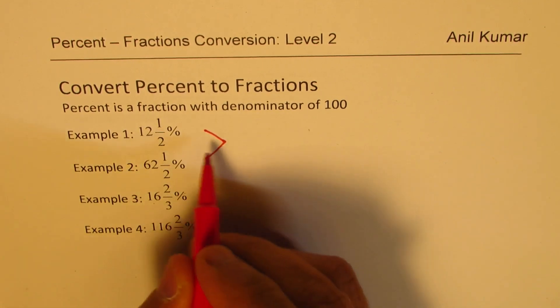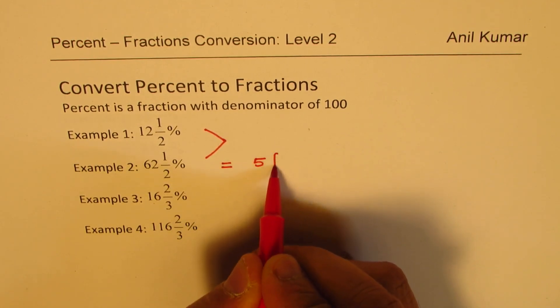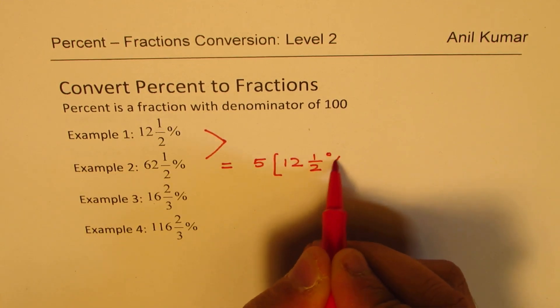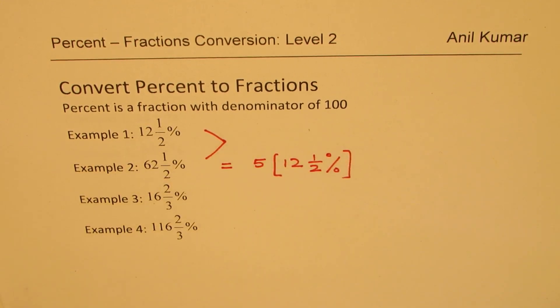Similarly, we could write this as five times. 62 and a half percent is five times 12 and a half percent. We'll see how. That is how they are related. And here also we do have a relation.